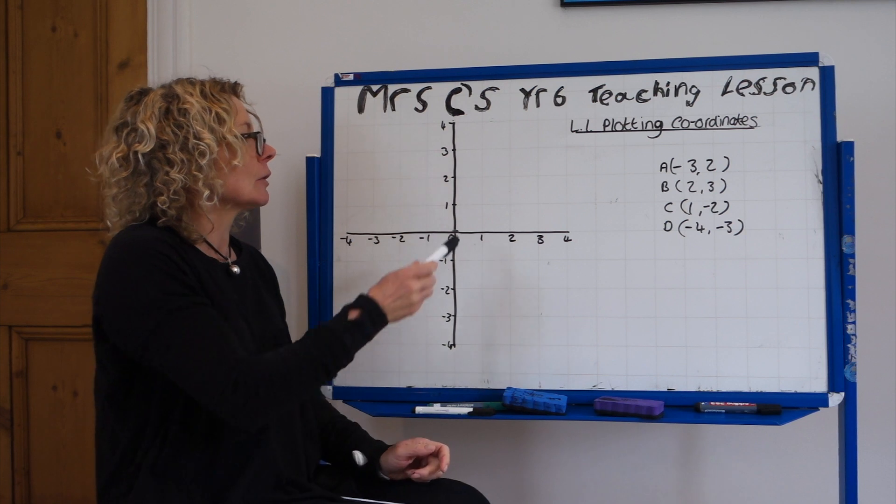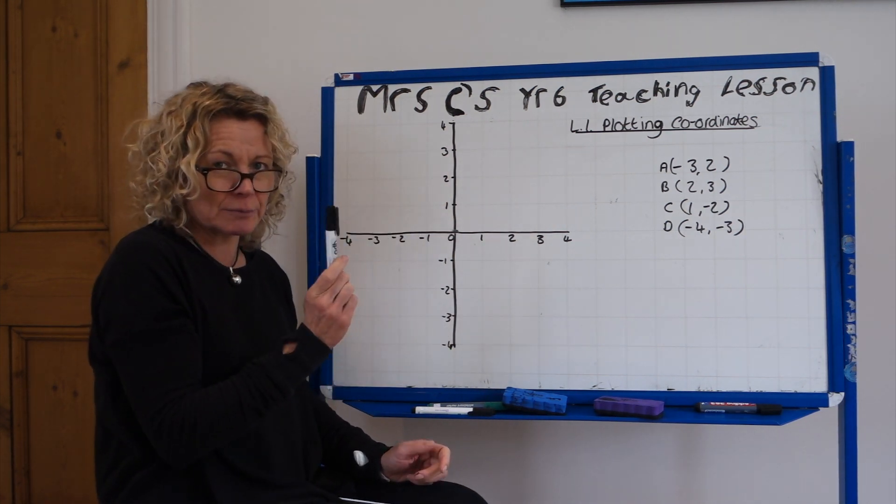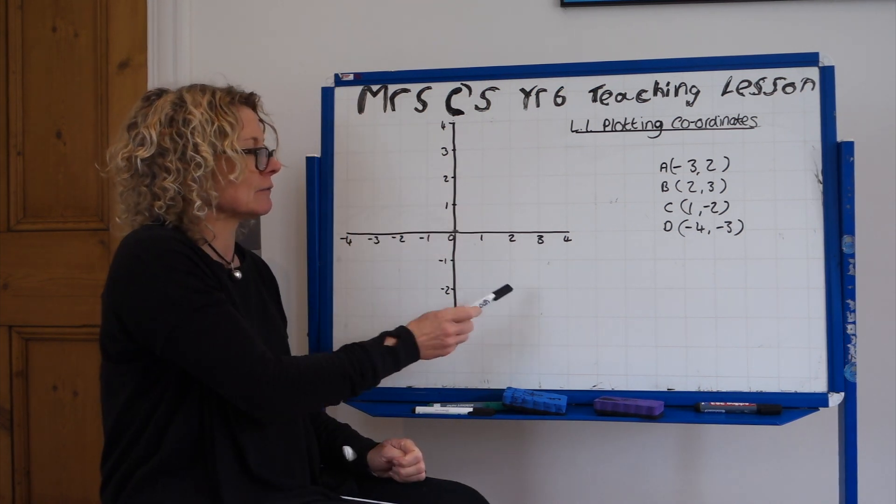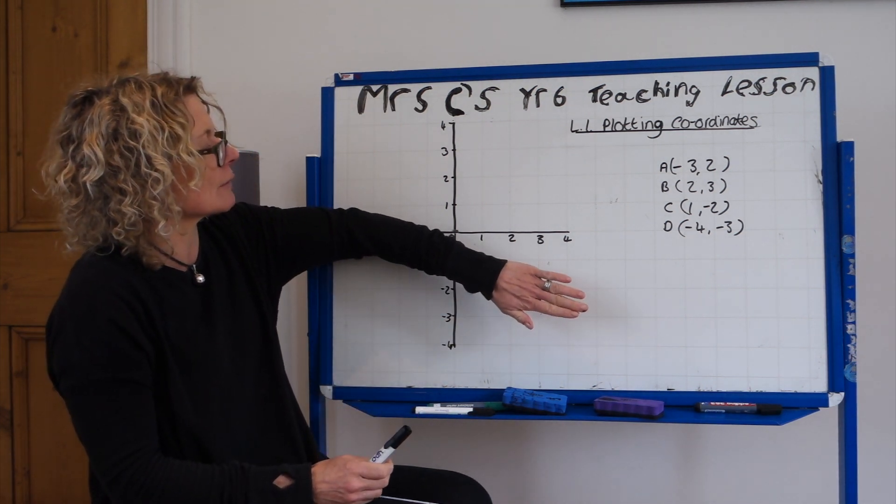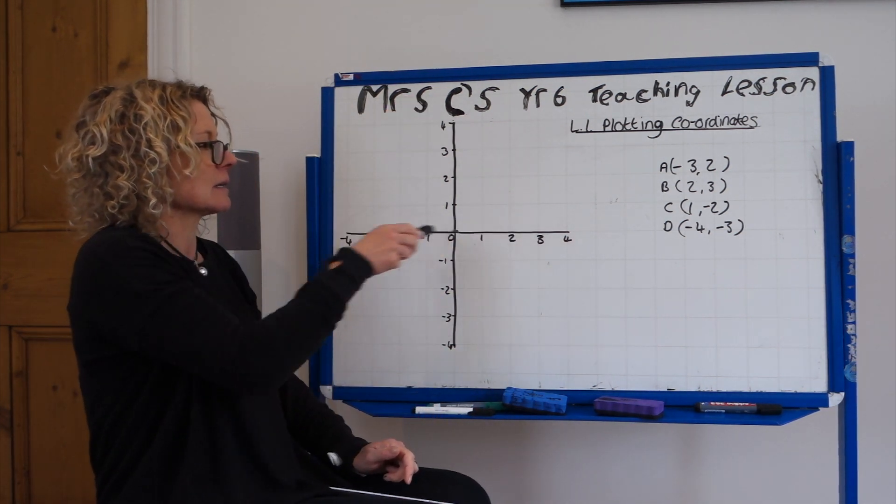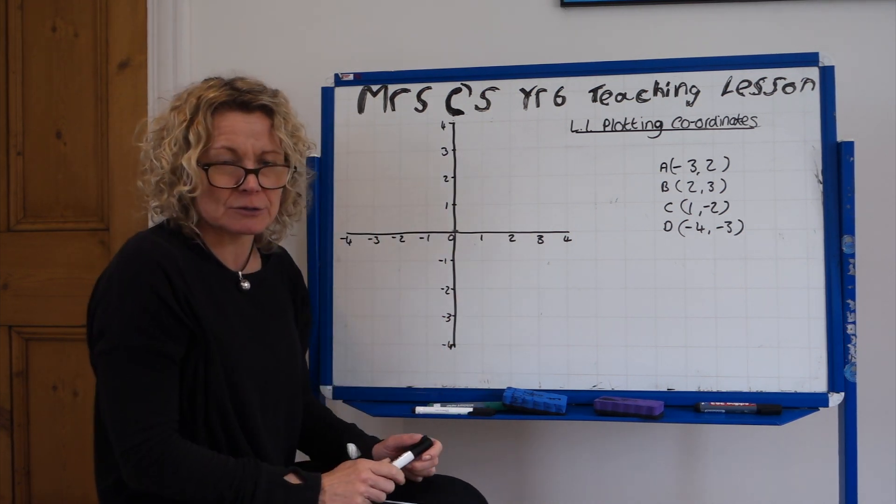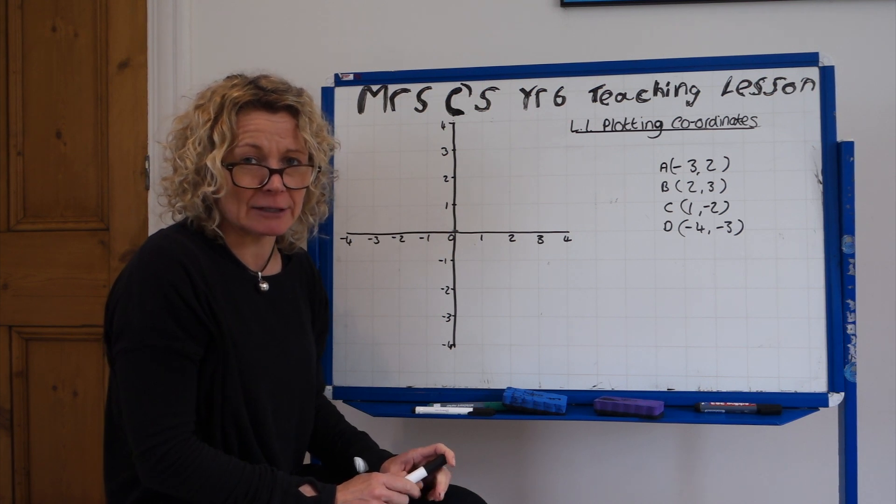Then you need to copy this quadrant grid. Quadrant because it's got four sections - one, two, three, four. Not a normal graph, it's got four quadrants, so that's why it's called a quadrant grid. So copy that and then come back to me.